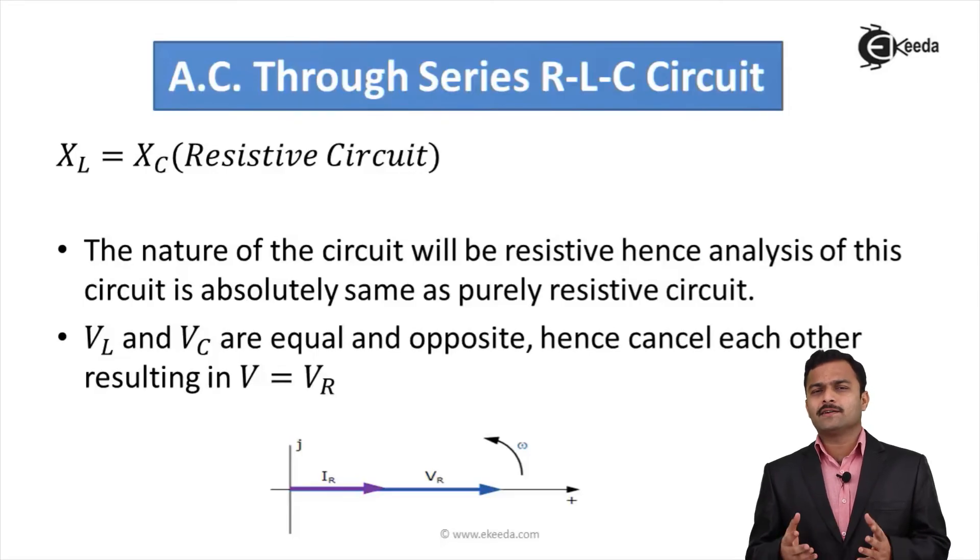Third possibility, suppose XL and XC both are equal. That will give rise to a condition where voltage drop across inductor is same as voltage drop across capacitor. One voltage drop is leading current by 90 degrees for inductive circuit and another voltage drop lagging current by 90 degrees for capacitive circuit. If both are equal, these two will cancel each other leaving behind only VR. Applied voltage is same as VR and current and voltage both will be in phase giving rise to a nature of circuit as resistive having phase angle zero. VC and VL will cancel each other. Ultimately, total voltage is nothing but voltage across resistance which will come in phase with current supplied giving rise to φ as zero degrees.